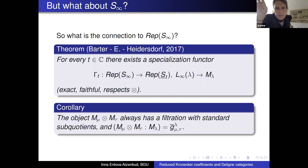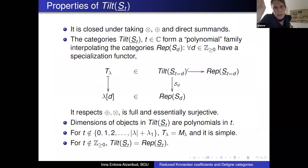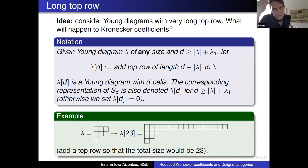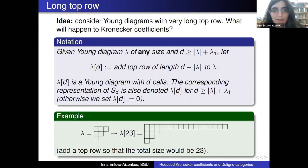Regarding the original Kronecker stability: is it still valid when you increase the first column instead of the top row, i.e., transpose everything? No, I believe it is not, because the sign representation does not behave nicely — it is not stable in that sense.